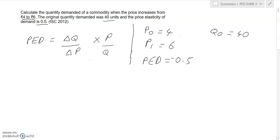If we substitute into the original formula, we have -0.5 equals change in quantity, which we don't know, upon change in price, which we do know. Since 6 minus 4, new minus old, gives us 2, times our original price which is 4, upon our original quantity which is 40.